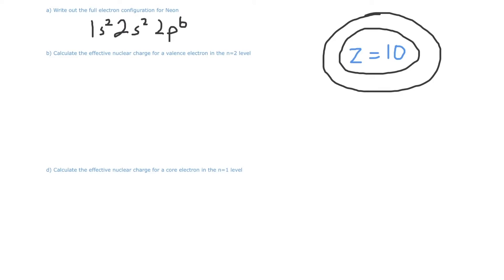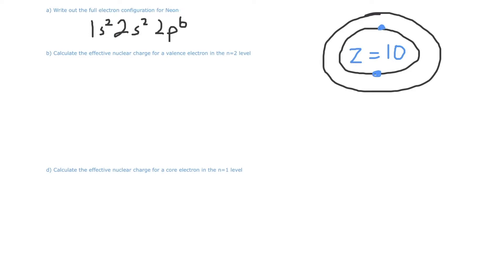In the first energy level, where n equals 1, we can see in the electron configuration that there are two electrons. So we'll draw in two dots to represent those two electrons on that first ring. In the n equals 2 level, we have to analyze this part of the electron configuration. If we add up two and six, we see that we have eight electrons in the n equals 2 level — so a full n equals 2 ring made up of eight electrons.